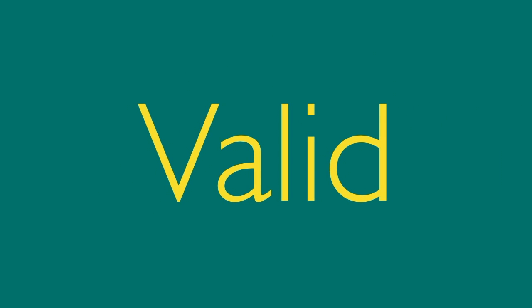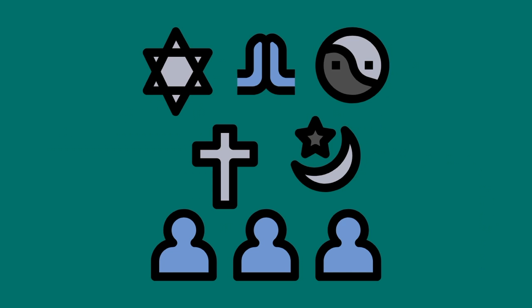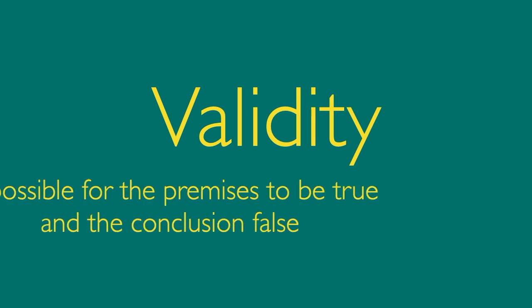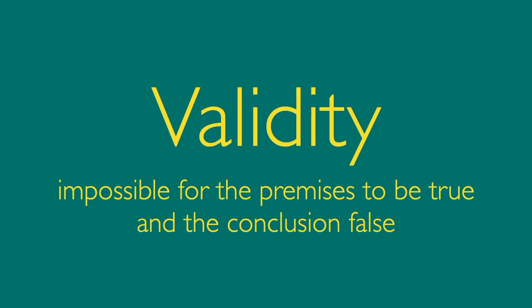We call good deductive reasoning valid. It's not the content of an argument that makes it valid — a valid argument might be about politics, religion, or the amazing elephant shrew. What makes an argument valid is its form. The form of a valid argument makes it impossible for the premises to be true and the conclusion false. If the premises are true, they force the conclusion to be true.